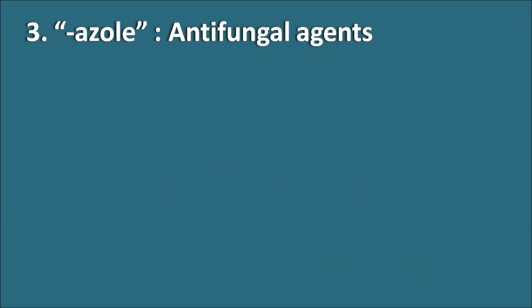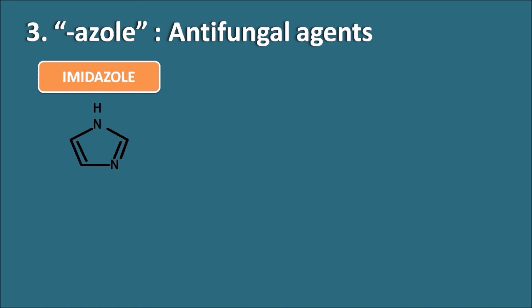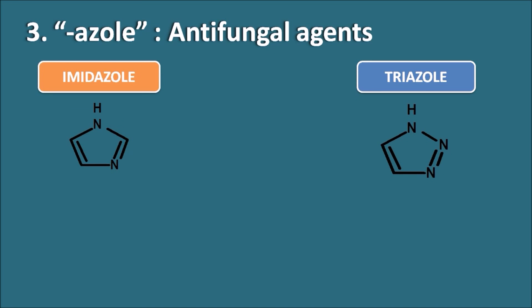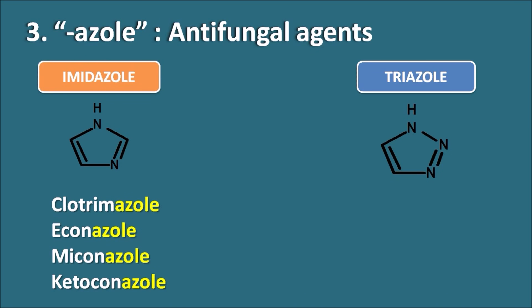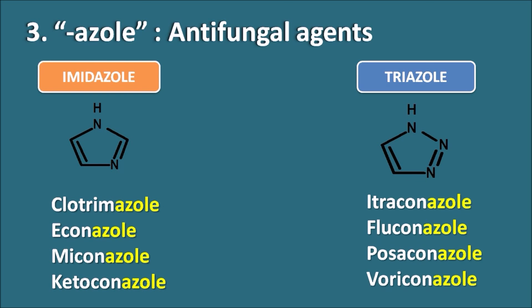Third, drugs ending with the suffix '-azole' are antifungal agents. We have two types of azole antifungals: those with an imidazole nucleus and those with a triazole nucleus. Drugs under the imidazole nucleus include Clotrimazole, Econazole, Miconazole, and Ketoconazole. Similarly, drugs under the triazole category include Itraconazole, Fluconazole, Posaconazole, and Voriconazole. Whether the ring system is imidazole or triazole, both share the same suffix '-azole'.